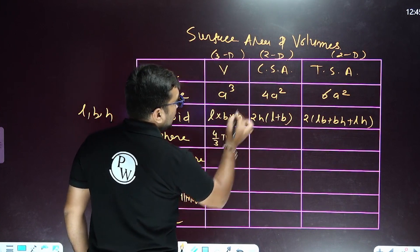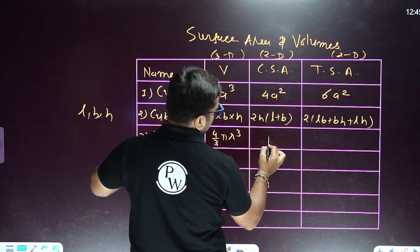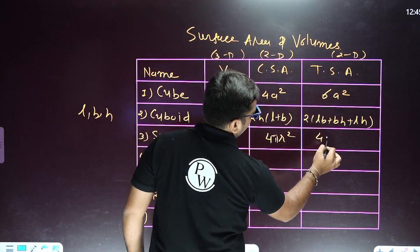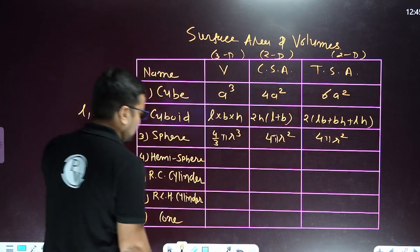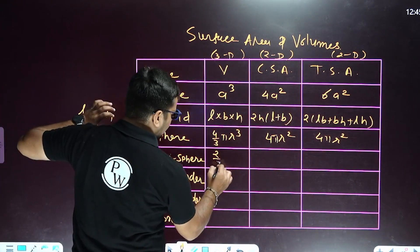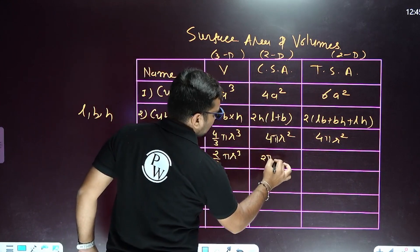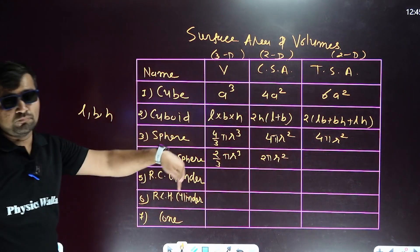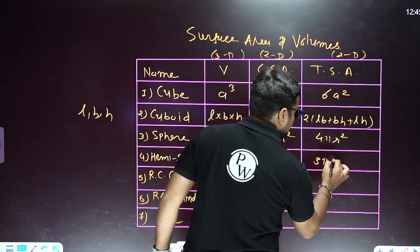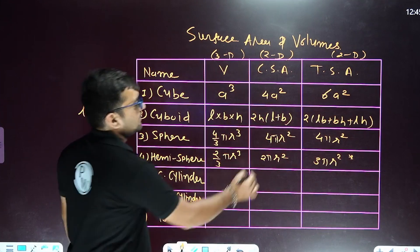For the sphere, volume is 4 by 3 pi r cubed. The curved surface area and total surface area are both 4 pi r squared. For a solid hemisphere, the volume is 2 by 3 pi r cubed — just half of the sphere. The curved surface area is 2 pi r squared, but the total surface area is 3 pi r squared, because you must include the flat circular base.